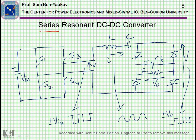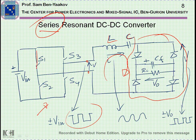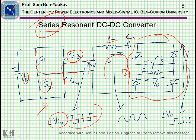It's called series because the load section is in series with the resonant circuit. We have the L, we have the C, and then we have the load section. The excitation is a square wave, which can be generated by a bridge of four transistors. When S1 and S4 are conducting, we connect VIN to one line and the other line is connected to ground. When S3 and S2 operate, it's reversed, so we get a plus/minus VIN square wave.